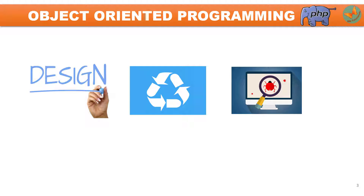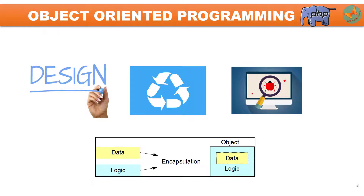And the fourth reason why object-oriented programming is used is that it provides security. It protects information through encapsulation, as is visible in this particular figure. So the data and logic are both protected in the object.